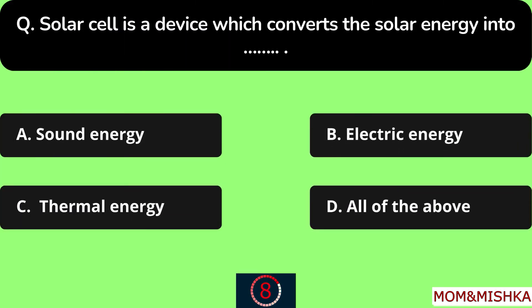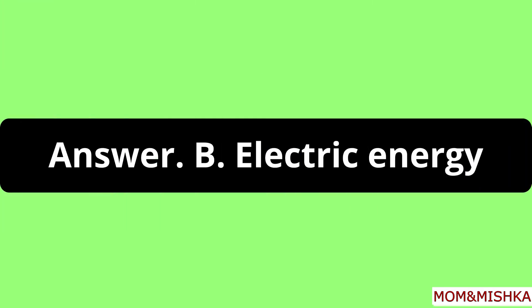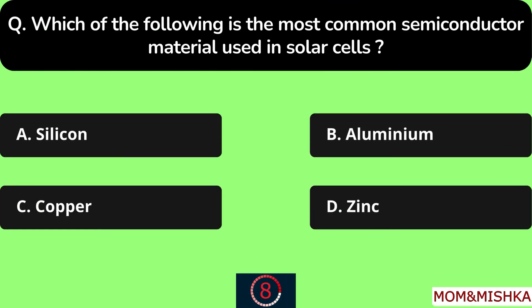A solar cell is a device which converts solar energy into electric energy, option B. Which of the following is the most common semiconductor material used in solar cells? Silicon, option A.